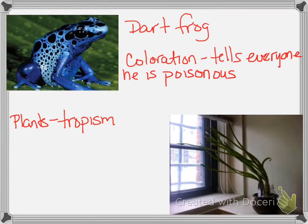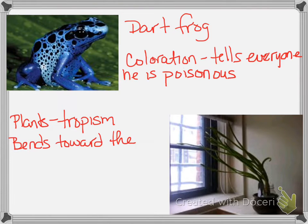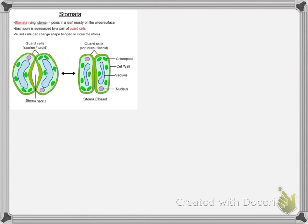Tropism is an adaptation so plants can try to get as much sunlight as possible. And why would they want sunlight? You know the answer — photosynthesis. They are trying to get sunlight so they can produce their own food through photosynthesis. Next is the stomata.